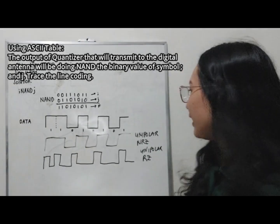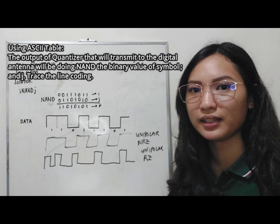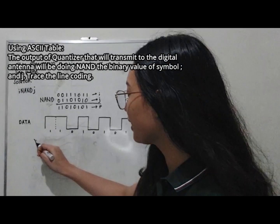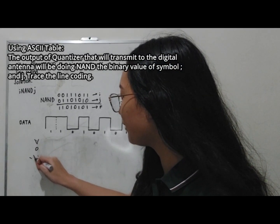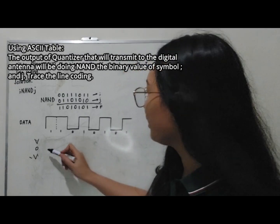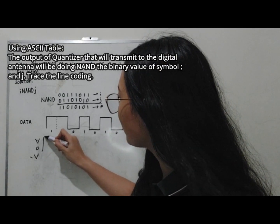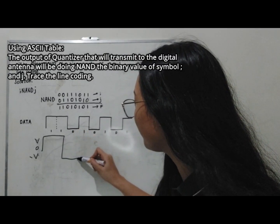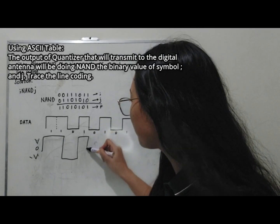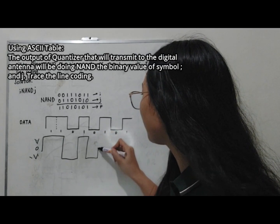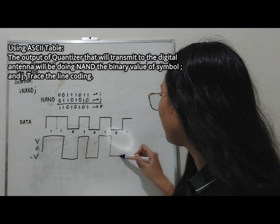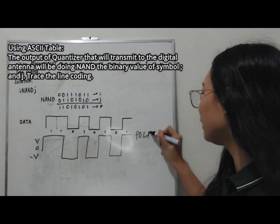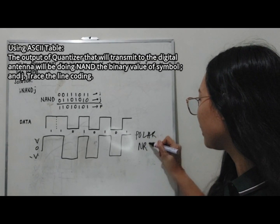Now let us write the polar NRZ. For polar signaling, a 1 is represented by a positive pulse and a 0 is represented by a negative pulse. For the sequence, we have: positive, positive, then negative for 0, positive again, negative for 0, positive again, negative for 0, positive. This is the polar NRZ waveform.